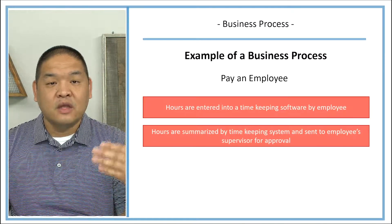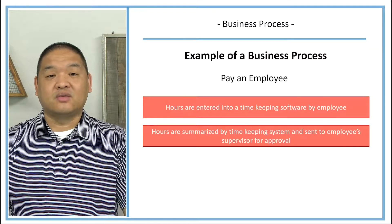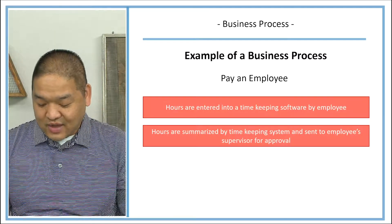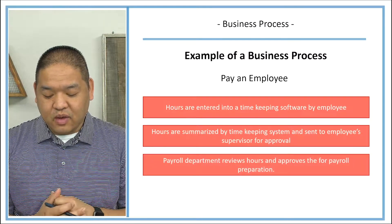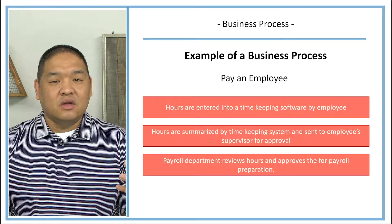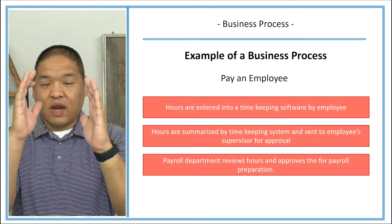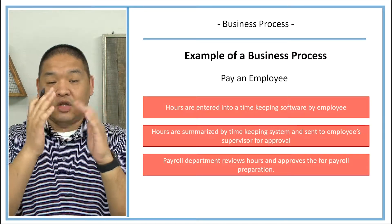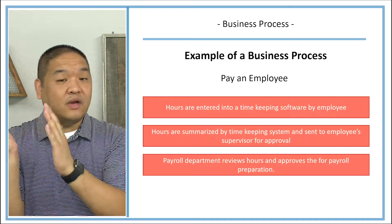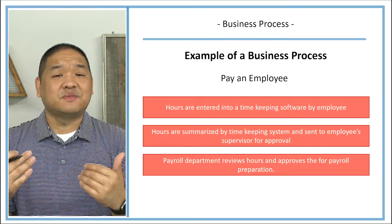The supervisor needs to approve the hours — otherwise an employee could fraudulently claim excessive hours. The payroll department then reviews the hours and approves payroll preparation as a second-level approval. The payroll department has a good idea of what payroll should come out to each period, and if totals are out of range, they investigate anomalies to avoid overpaying or underpaying any employee.